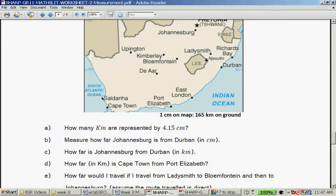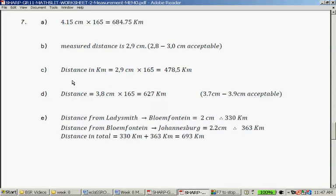How far in kilometers is Cape Town from Port Elizabeth? There's Port Elizabeth. You first measure it. And it should measure around about 3.8 centimeters. If you times it by 165, you get 627 kilometers.